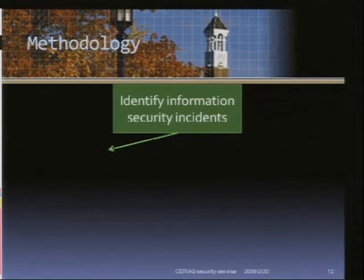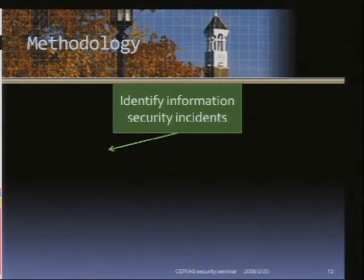We search 12 different keywords — such as virus, worm, computer breaking, or identity theft — from 1996 to 2006. We search these keywords on major media outlets such as the Wall Street Journal, the Washington Post, USA Today, and also on CNET and ZDNet.